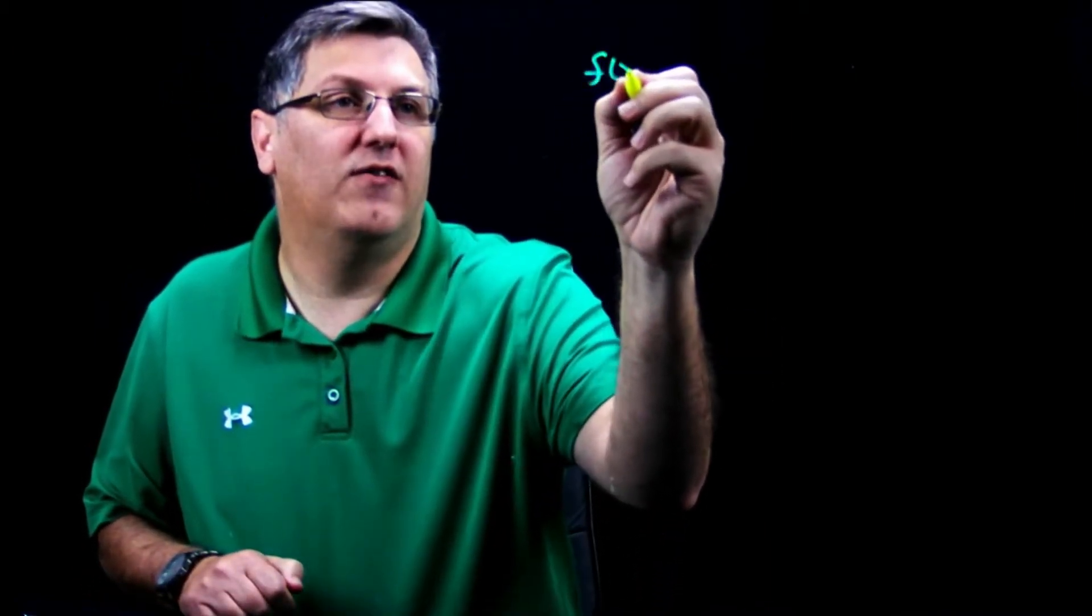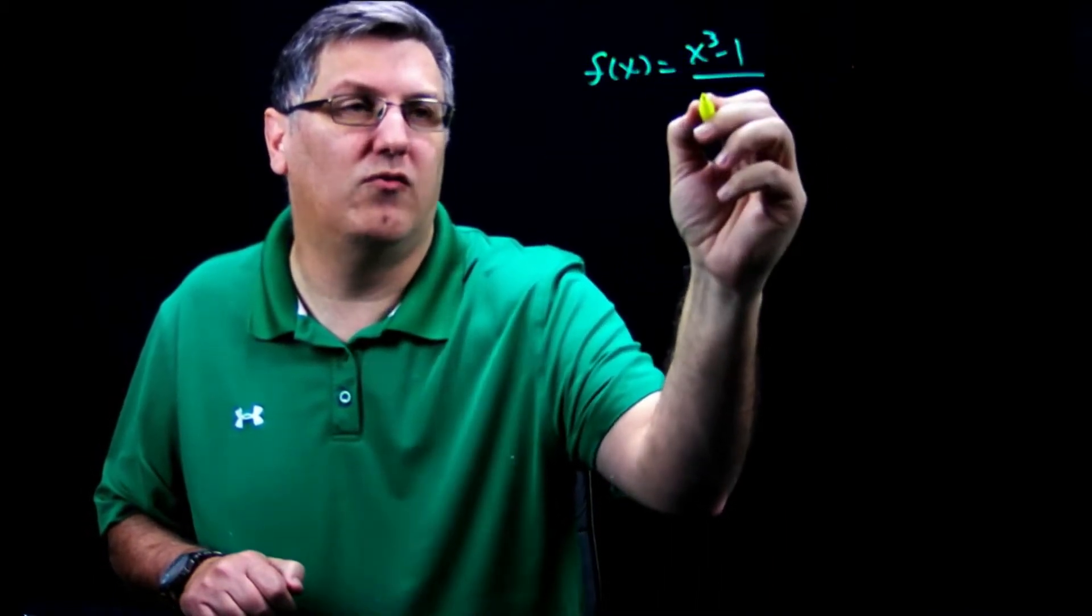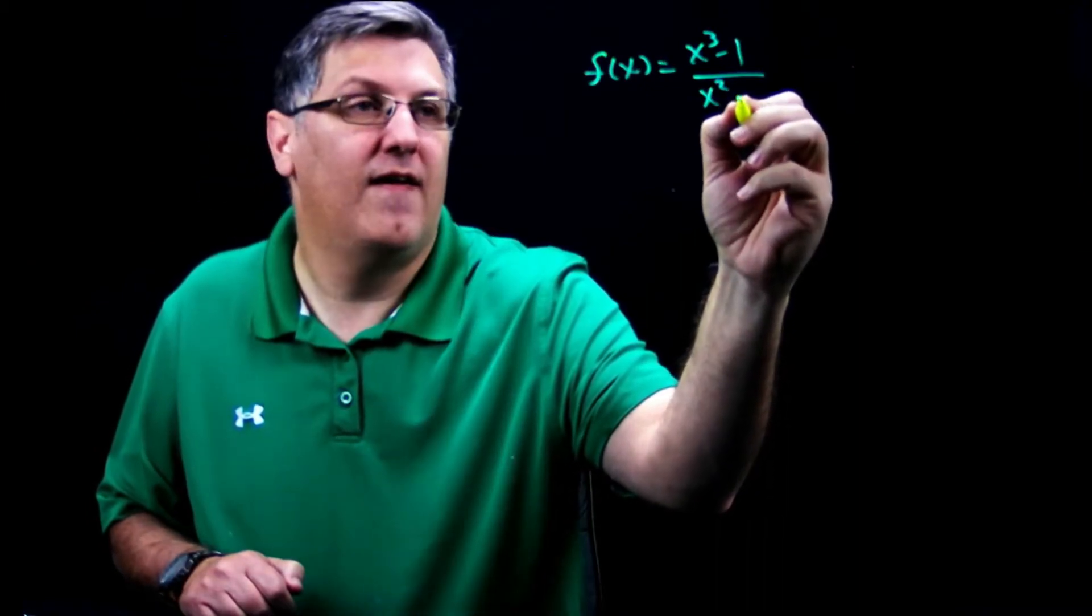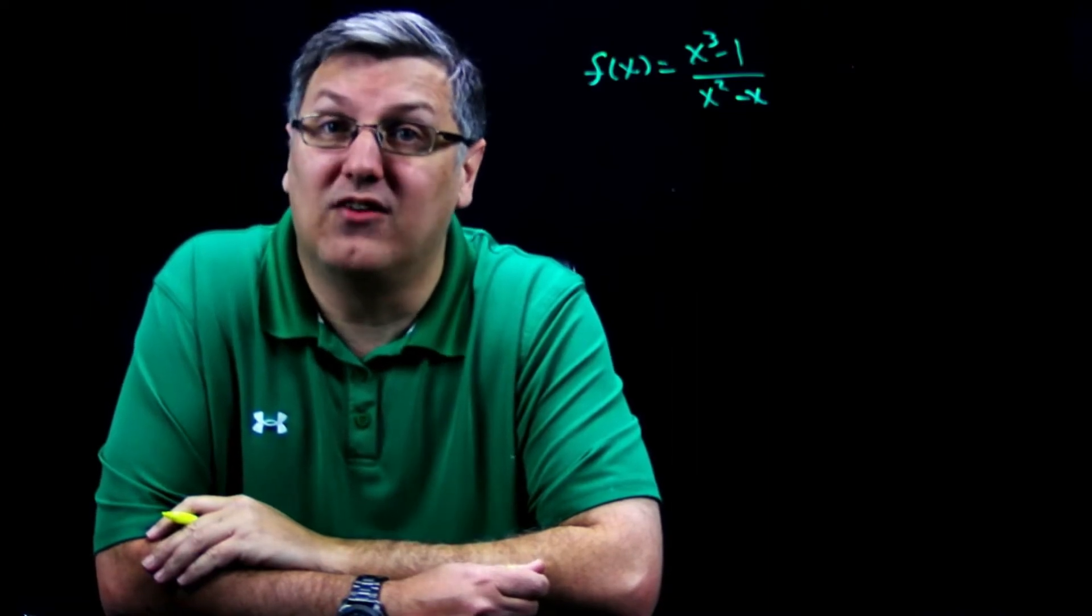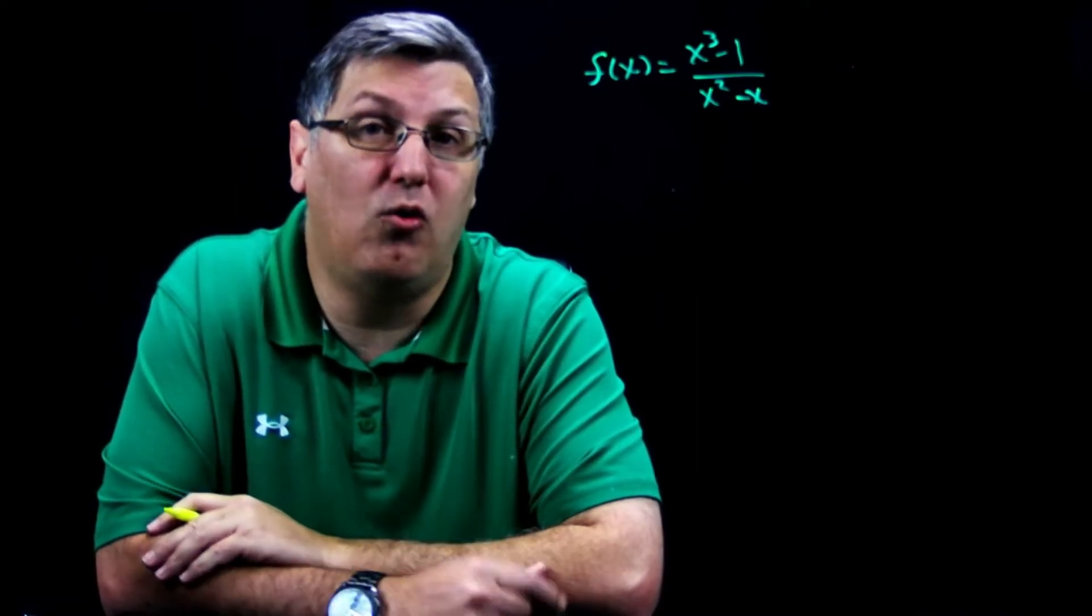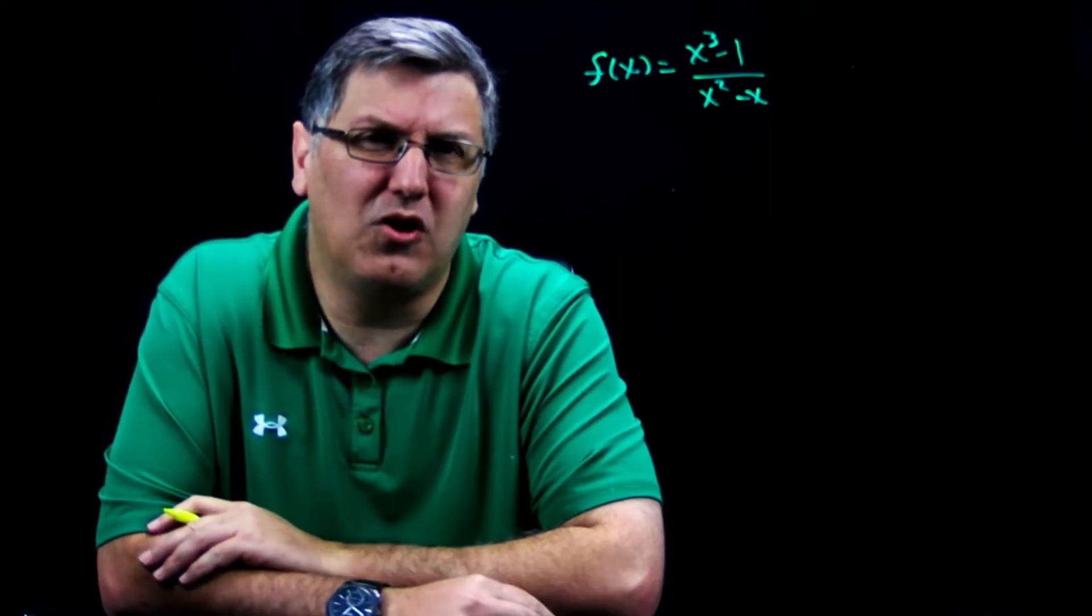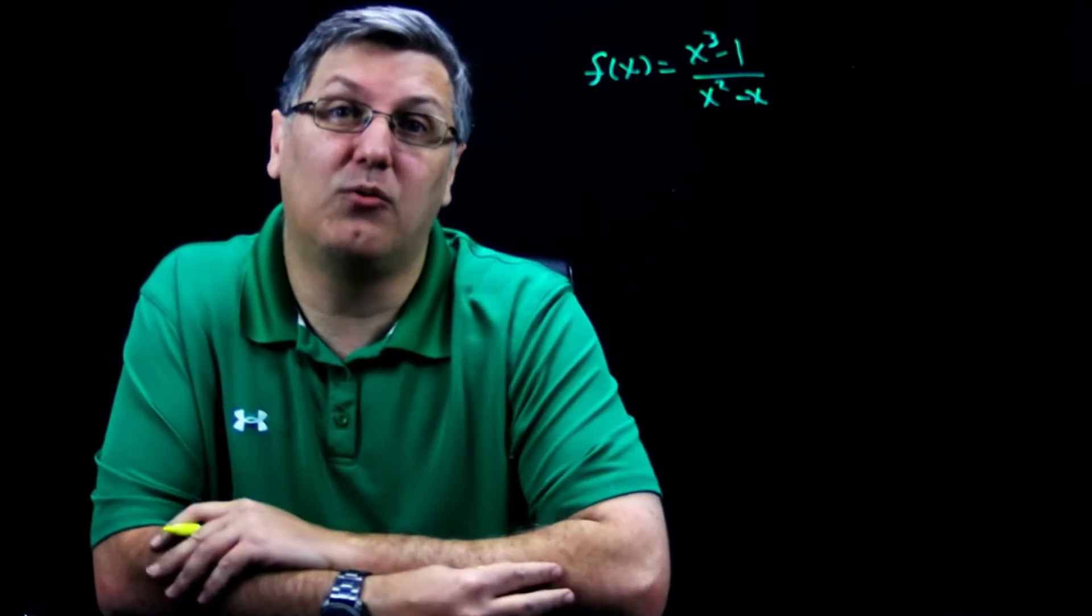Let's do f(x) equals x cubed minus one over x squared minus x. And well, let's just go through our process. Let's find any holes, let's find any vertical asymptotes, and let's see if we can find the slant asymptotes. I will tell you this will not have a horizontal asymptote.